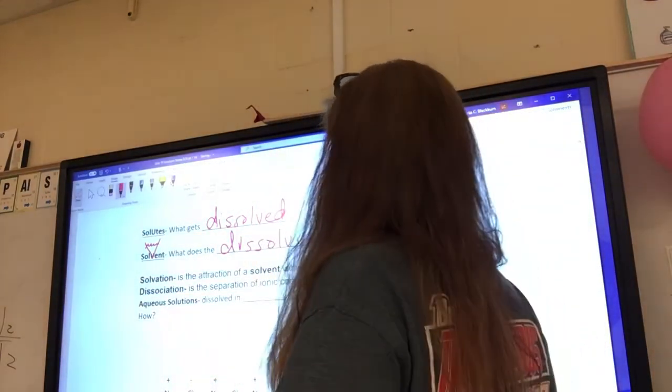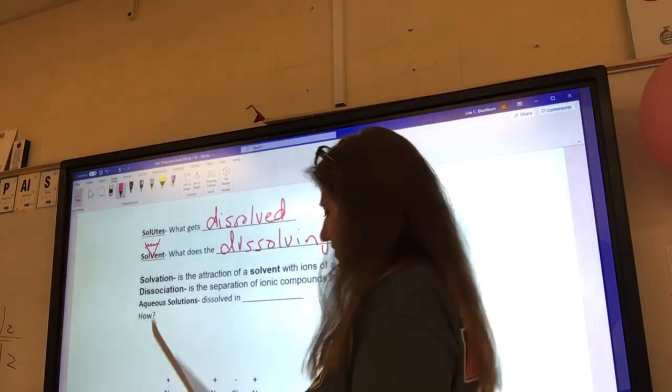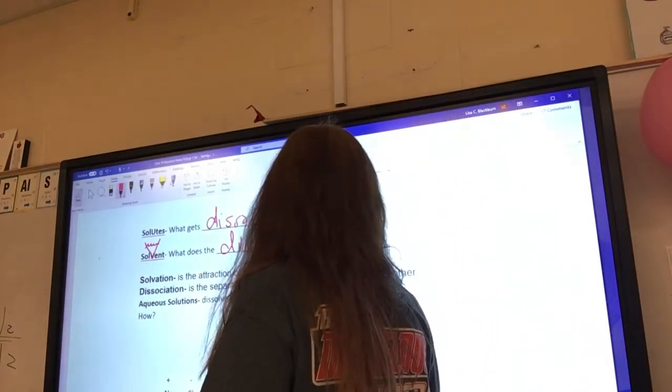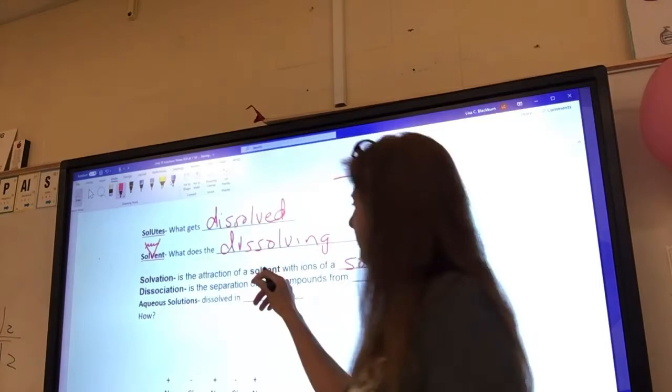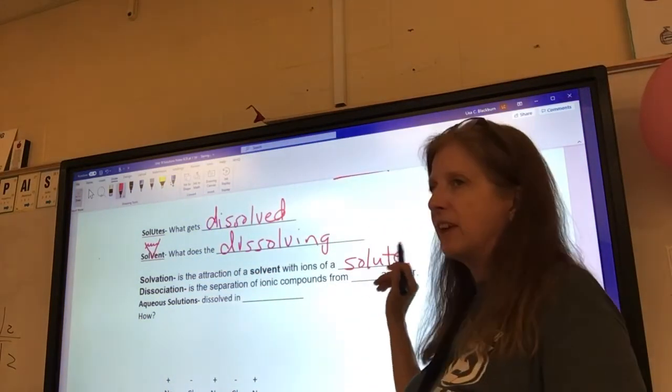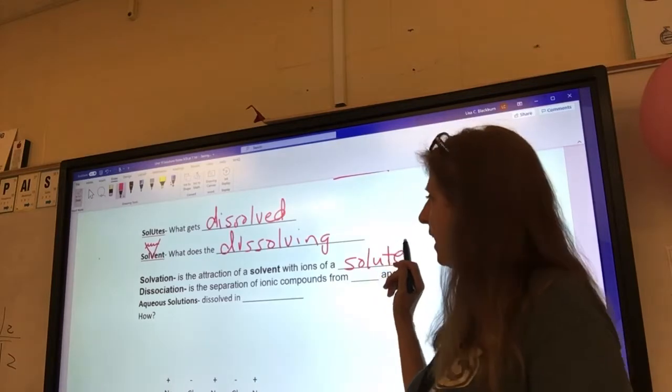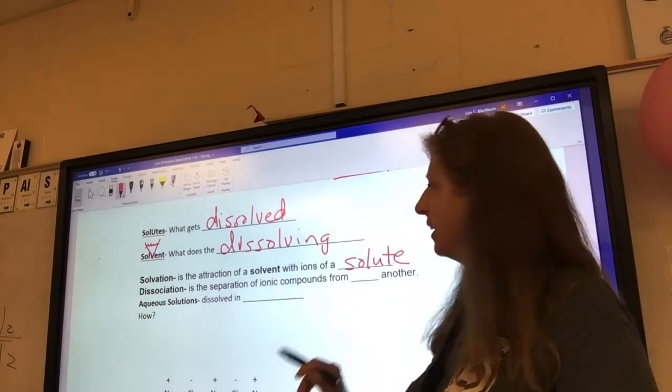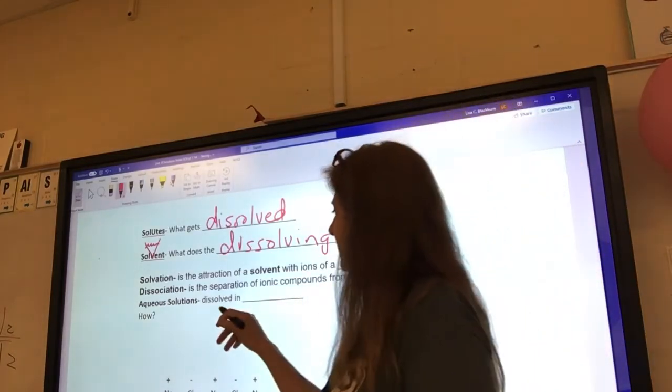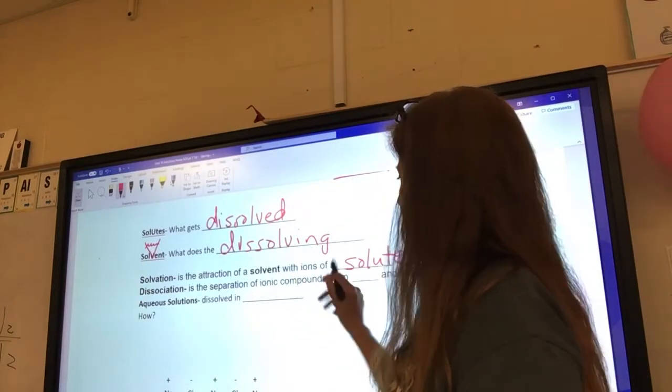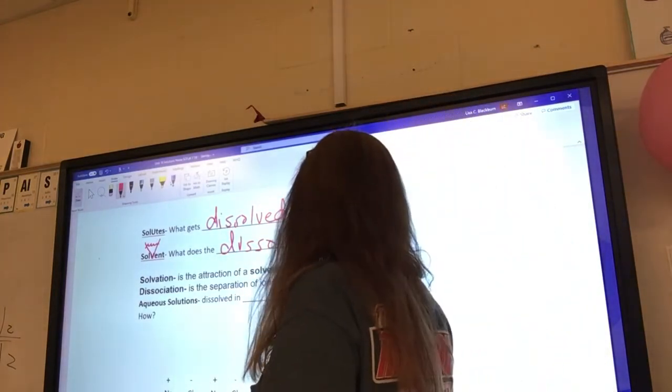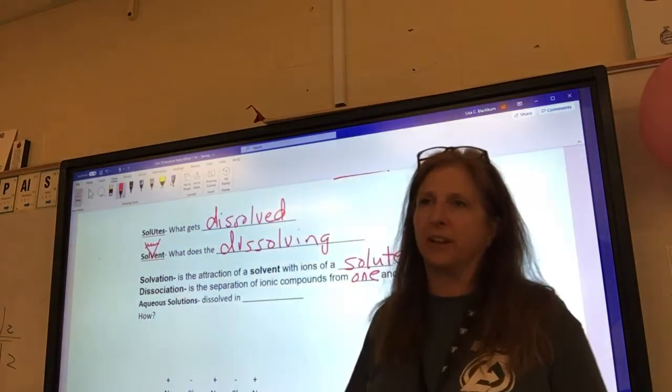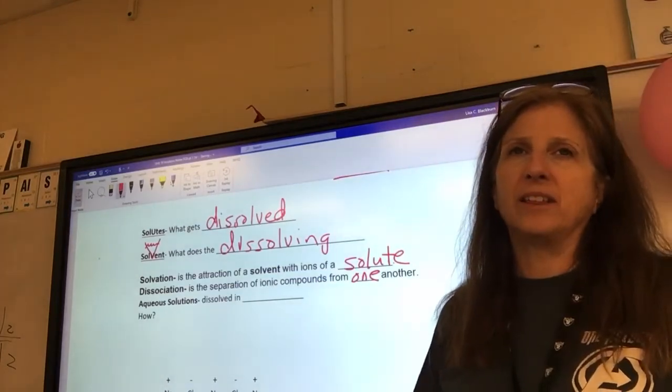Solvation. Another S word. Solvation is the attraction of a solvent with ions of a solute. So, you've got a solvent, and what is getting dissolved has ions, positive and negative charges. And that solvent is attracted to the solute and pulls it apart, and it's called solvation. Disassociation is what happens when the ionic compounds separate from one another. So, solvation causes disassociation. I told you this was vocabulary. You're all right with it?